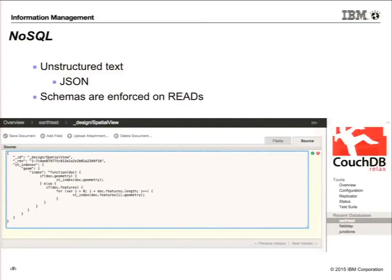NoSQL really is just unstructured text, and this text is represented within CouchDB as JSON. You don't have a schema on write — you have a schema on read. You write a view inside your database as a JavaScript function. If a document has a geometry, I know it's a GeoJSON document and I can go and index that document. On write you can write whatever you want, and it's on read that you're pulling out that data. Every index within CouchDB is incremental, so you're not rebuilding that index all the time — it's just on a single update to that database.